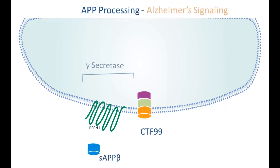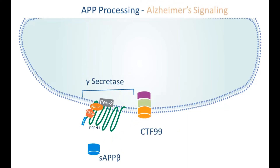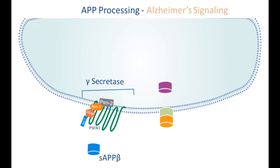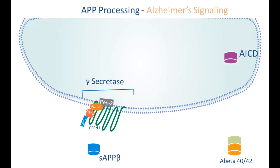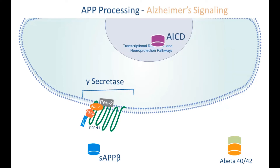In Alzheimer's disease, the gamma secretase complex is again assembled, but instead cleaves the CTF99 fragment into an AICD fragment and an A beta 40-42 peptide. AICD is again translocated to the nucleus, where it affects the transcriptional regulation of several proteins and drives neuroprotective pathways.